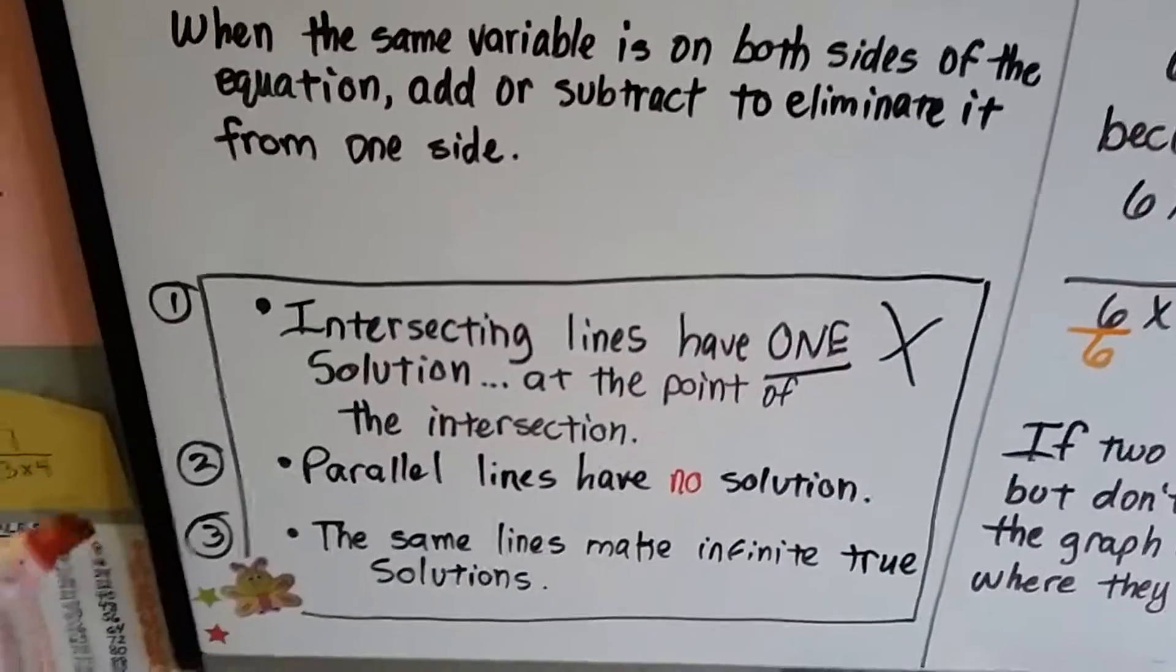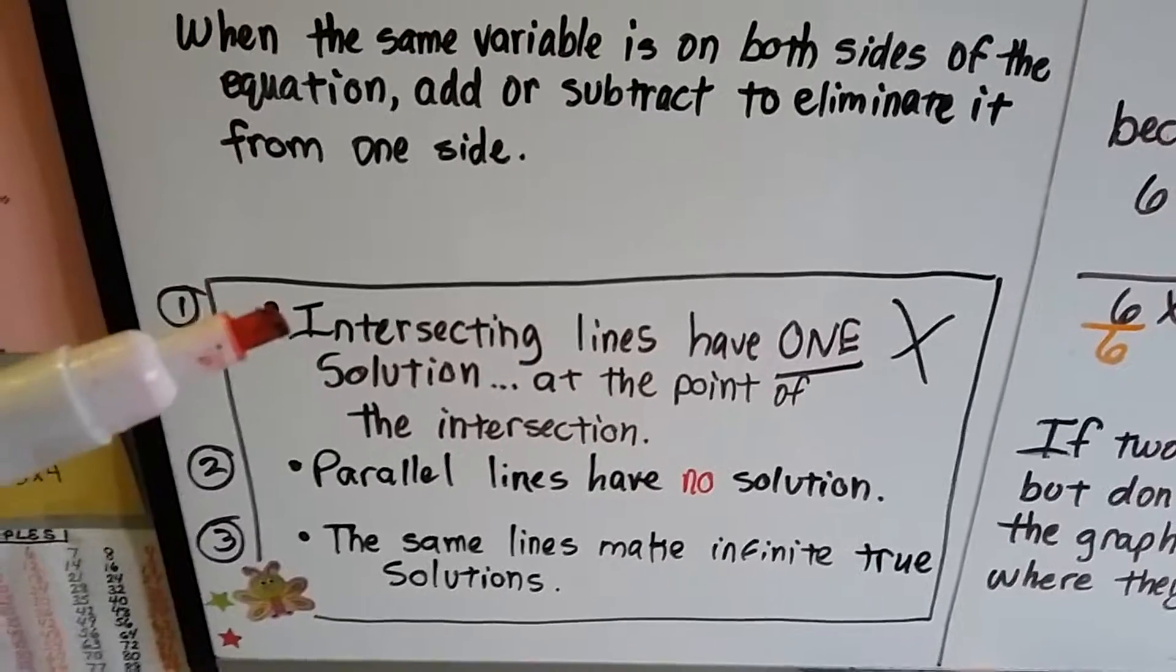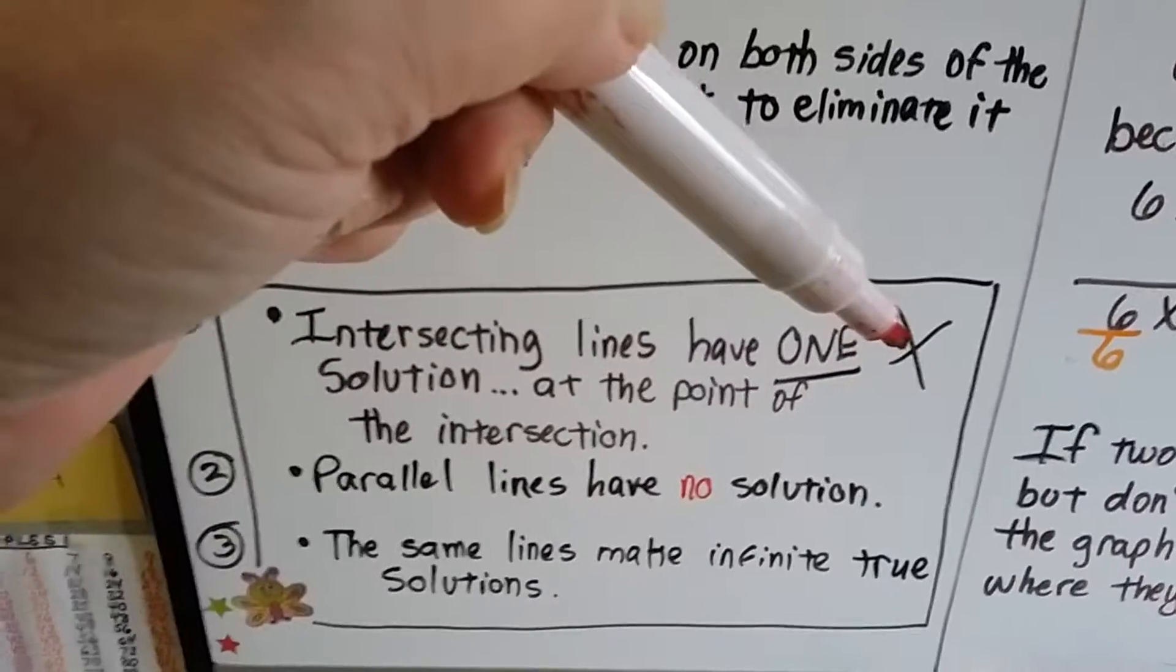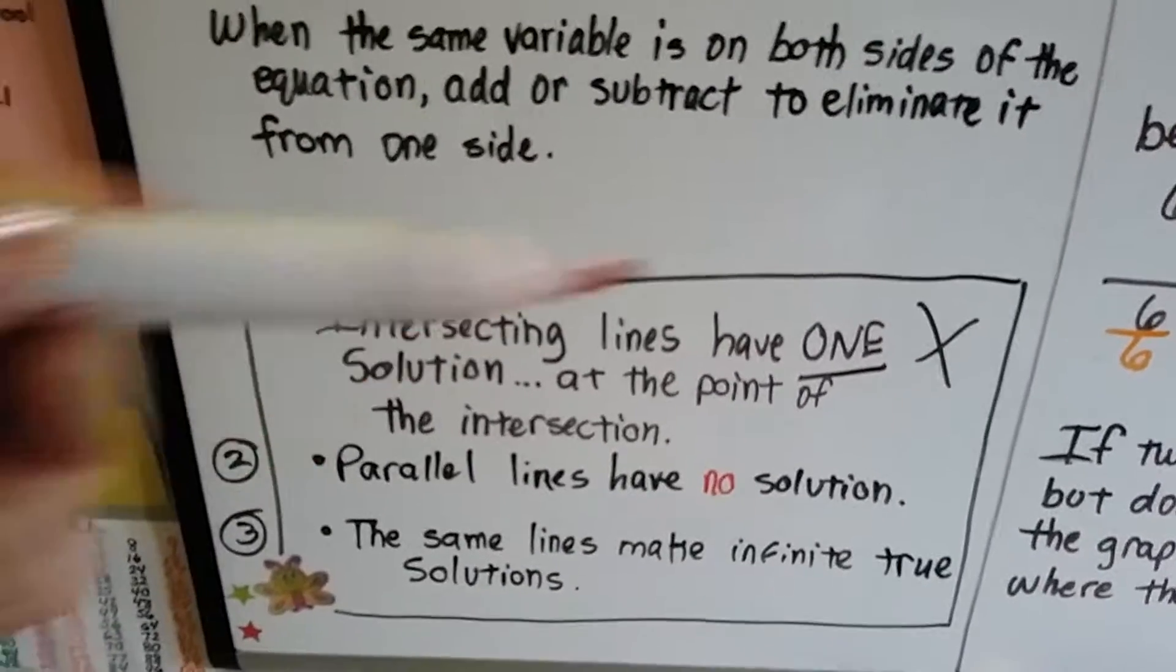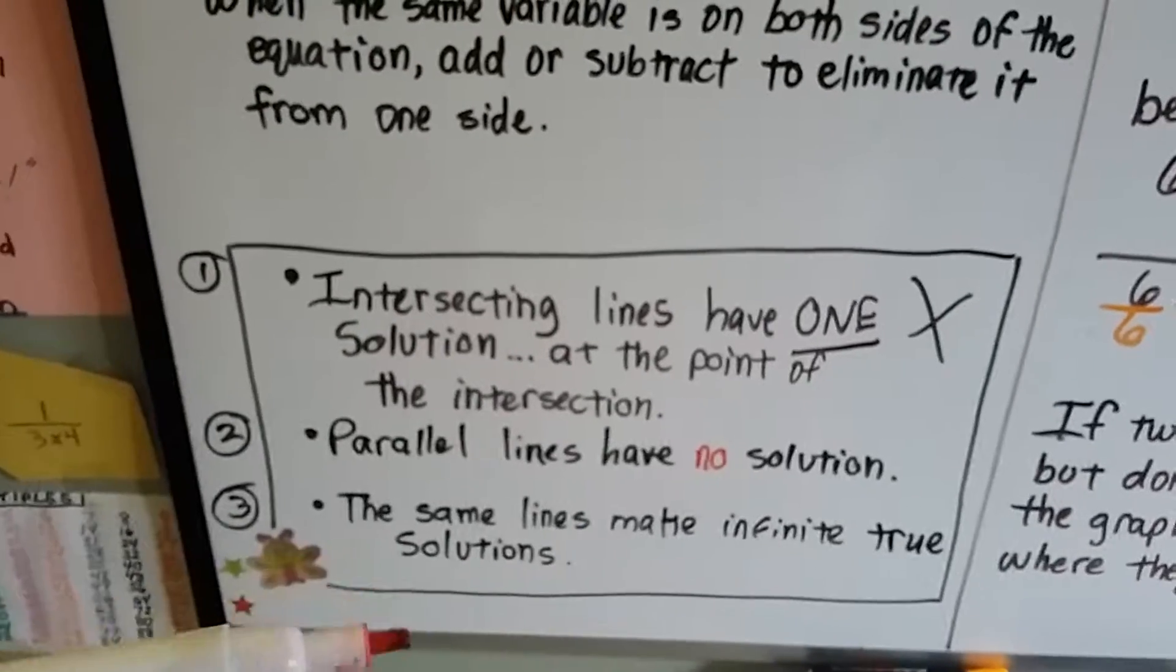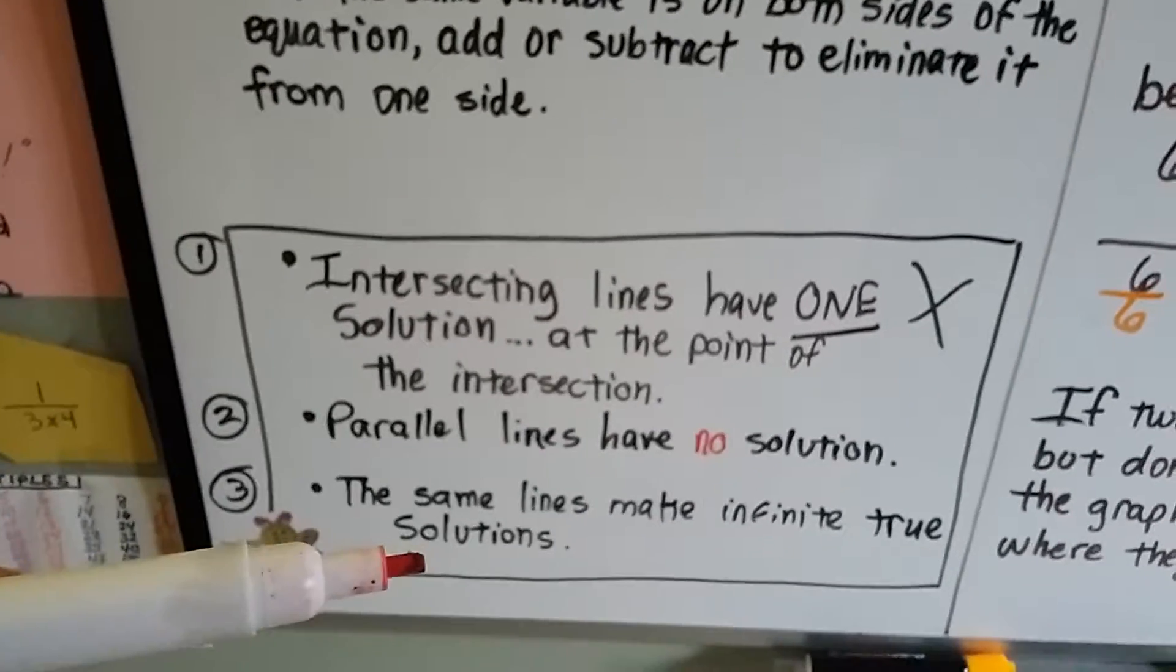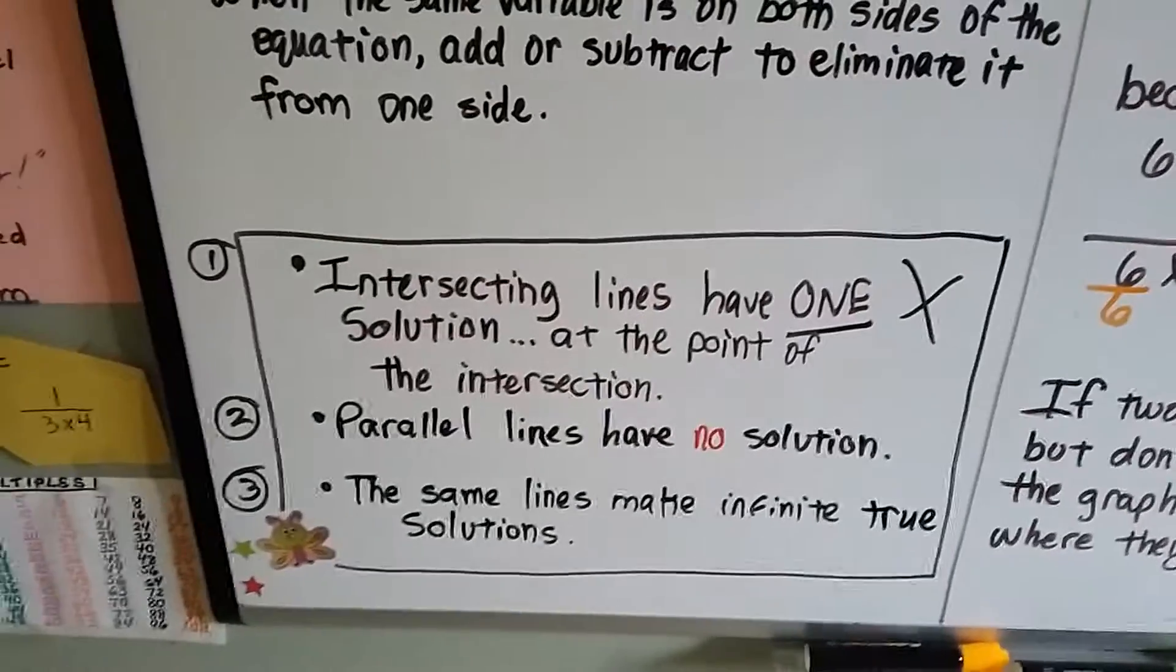Intersecting lines have one solution at the point of intersection. Parallel lines have no solution because they don't touch. Same lines, lines on top of each other, make infinite true solutions because they're touching infinitely.